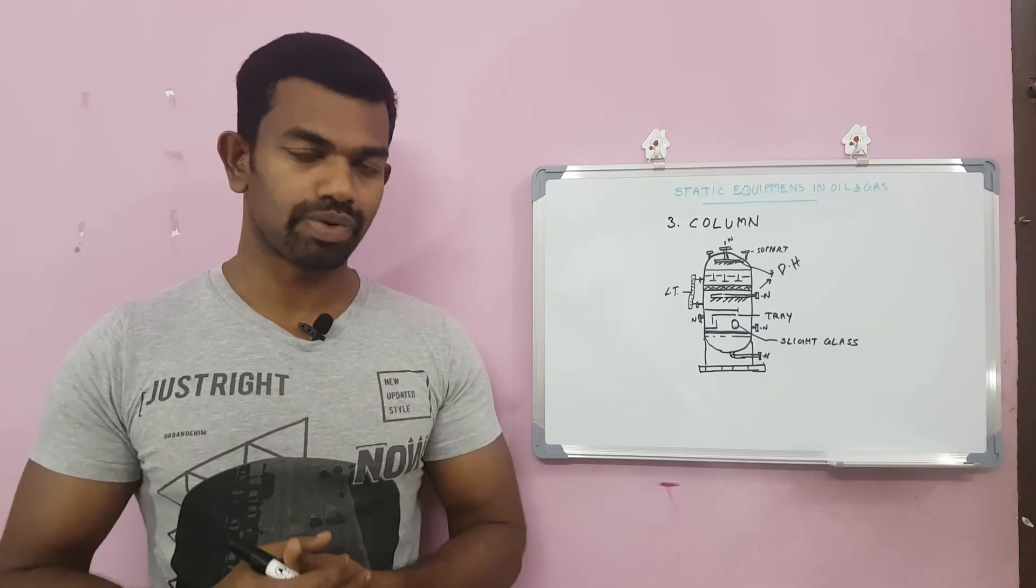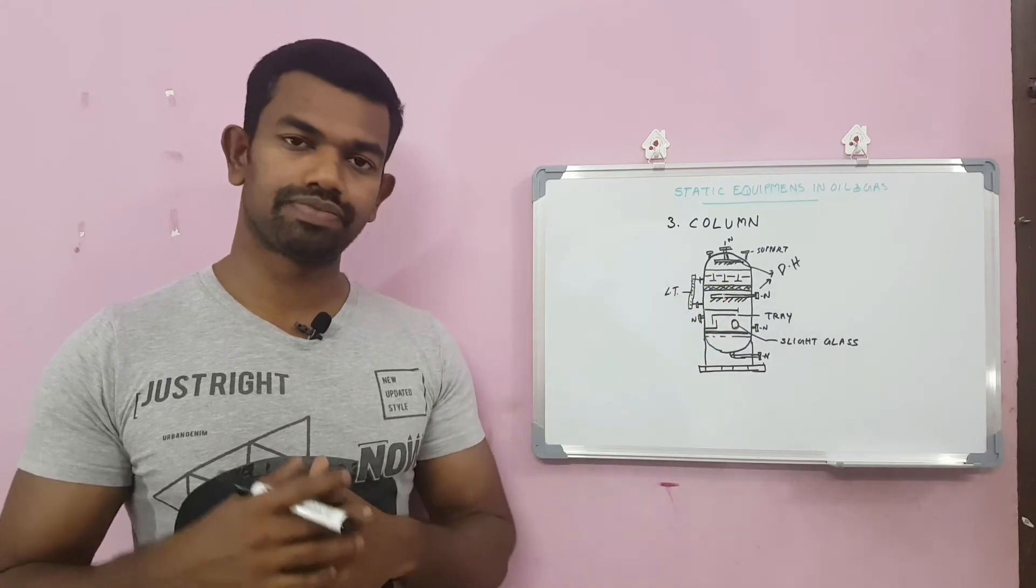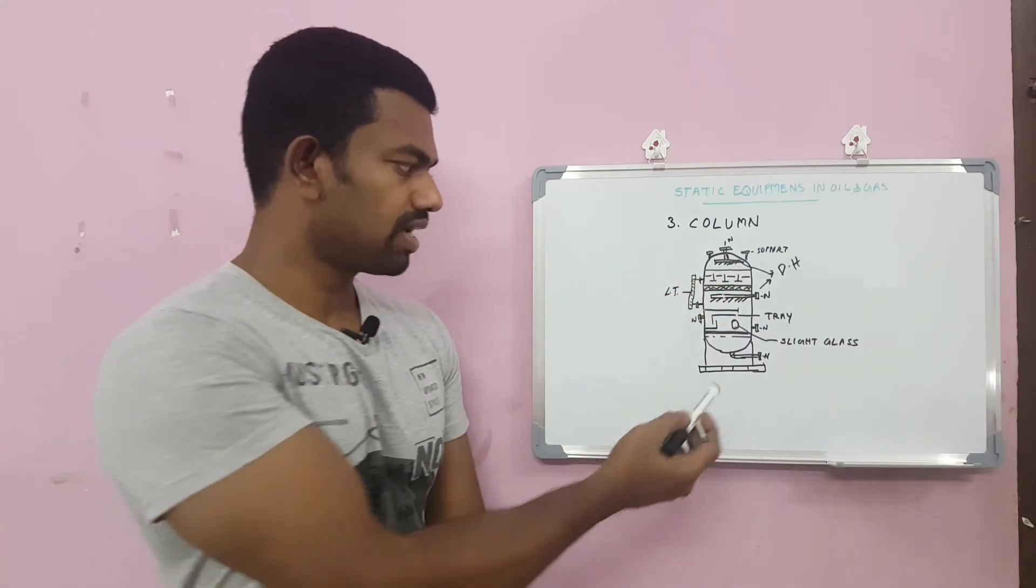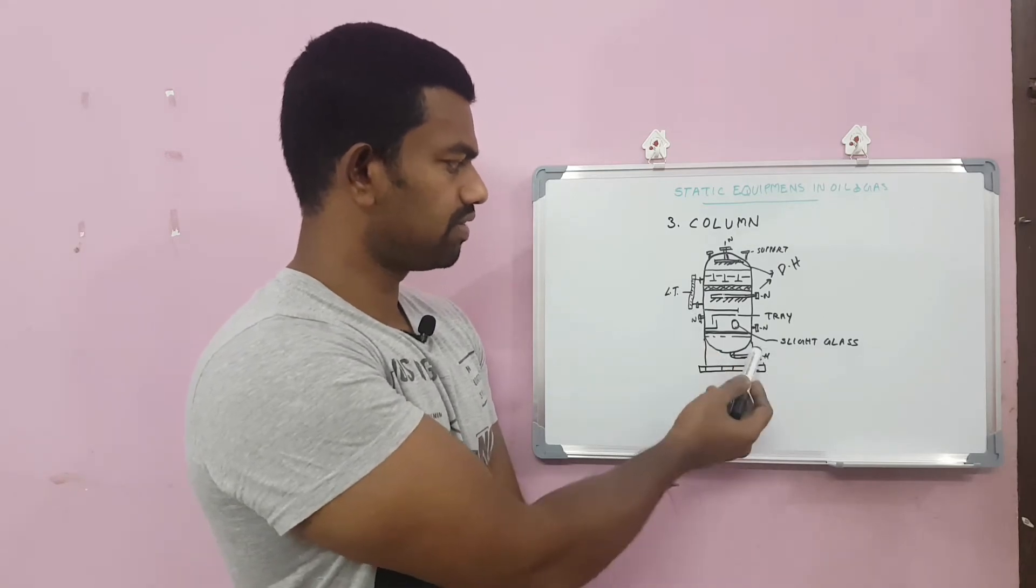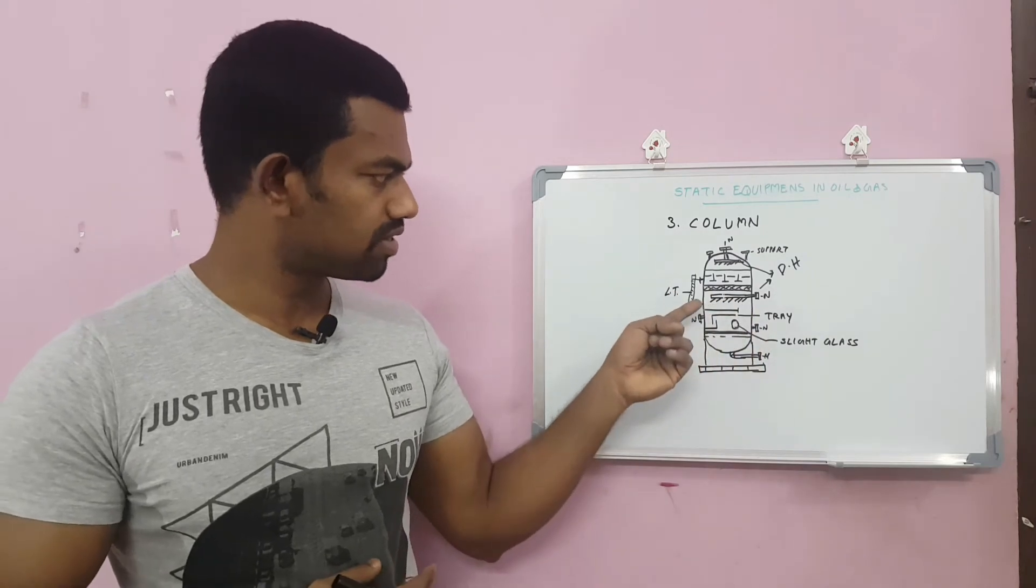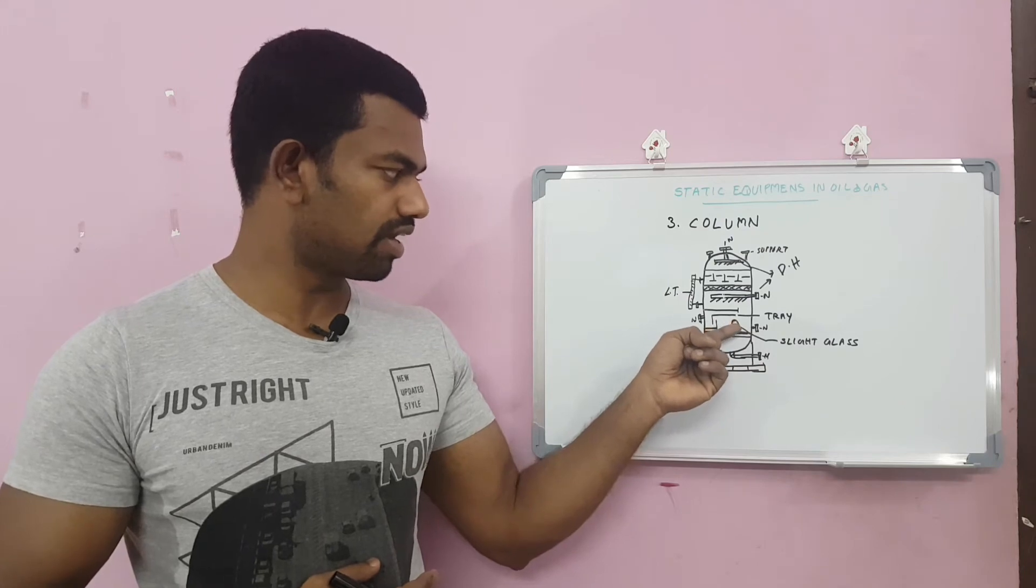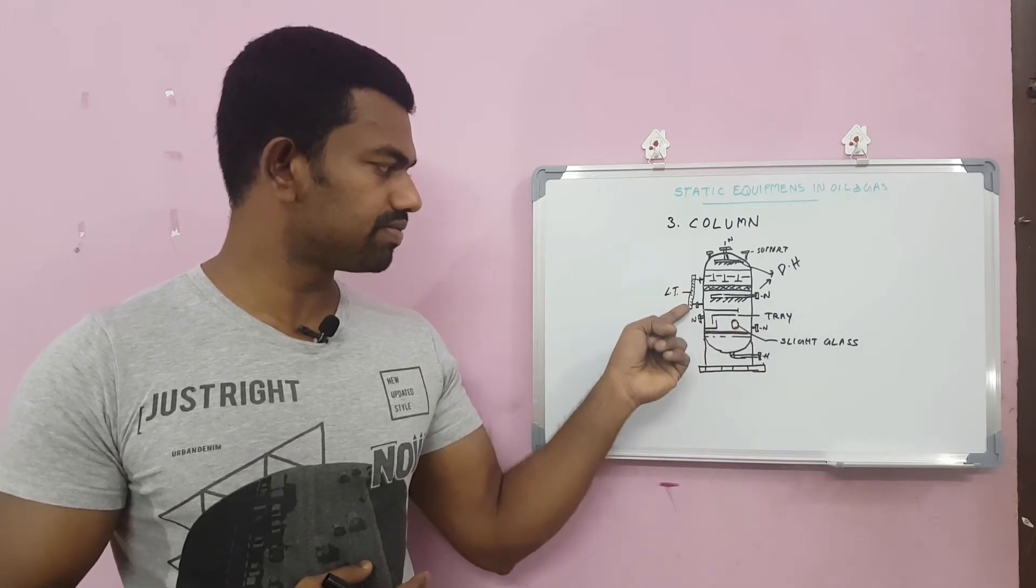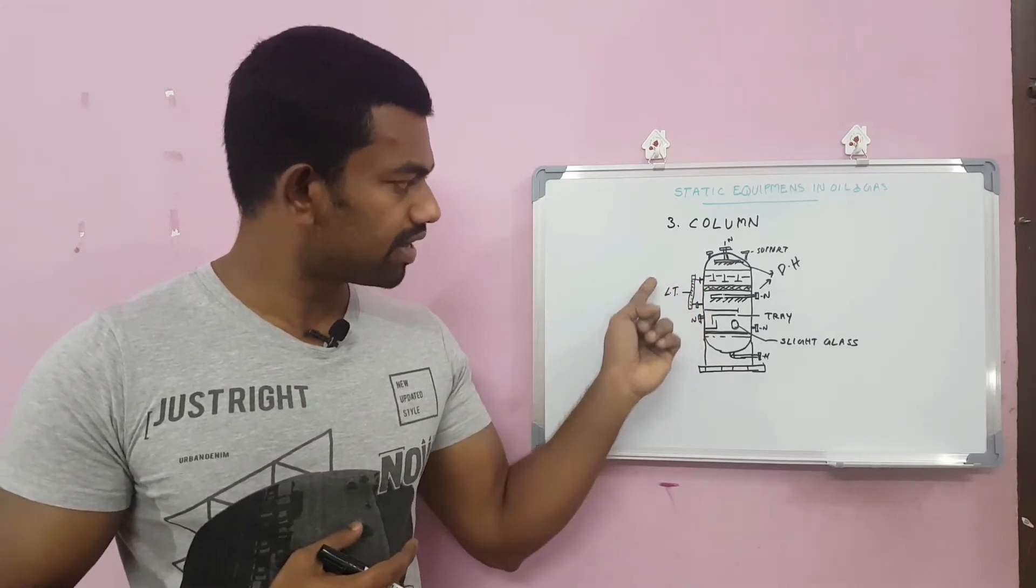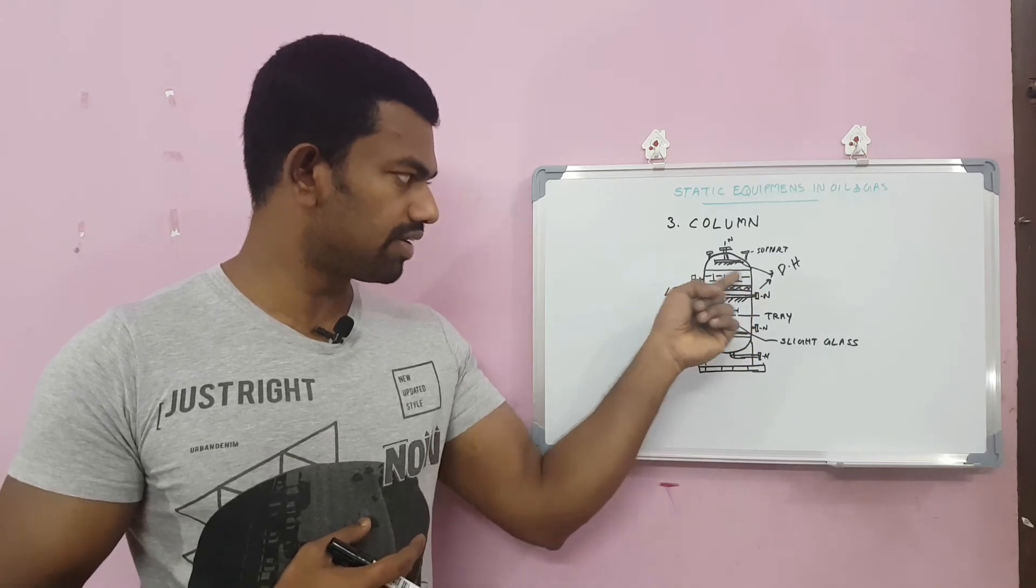Different kinds of trays are coming inside. There are tray valves. Based on the process, it will separate the fluids in different stages. It will be collected from different nozzles from different locations. Other components are the sight glass for getting the visual inside, and the level transmitter verifies the level of the contents.